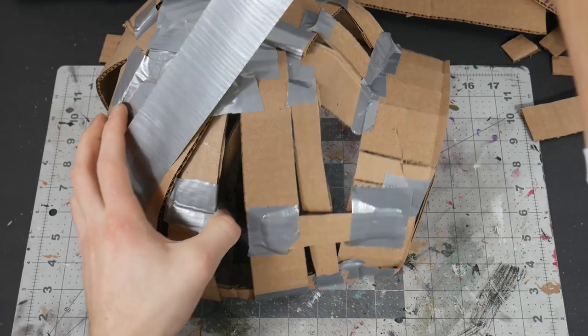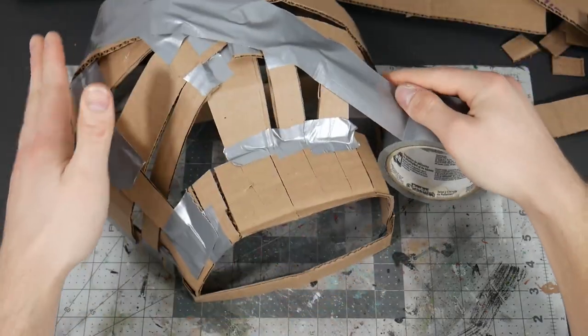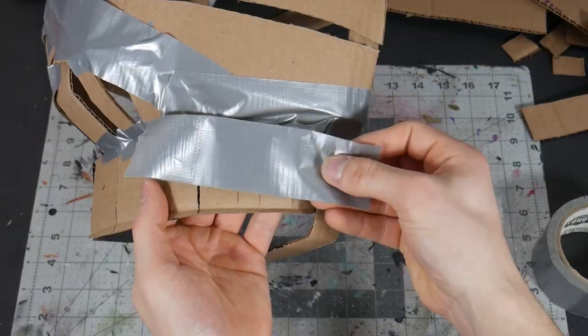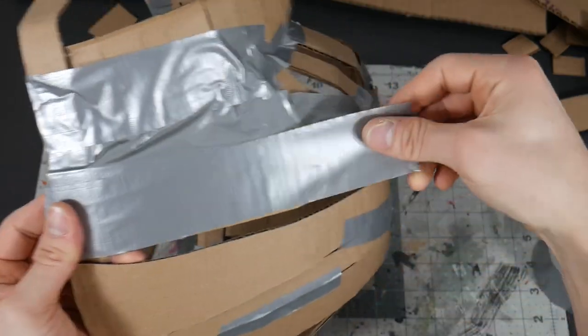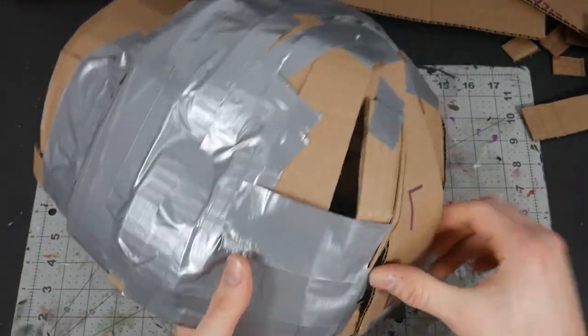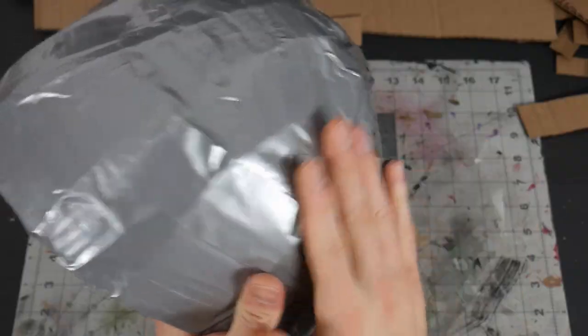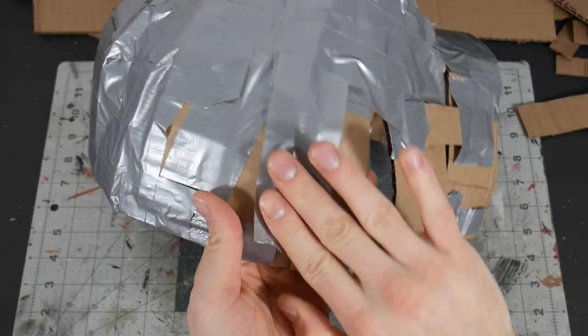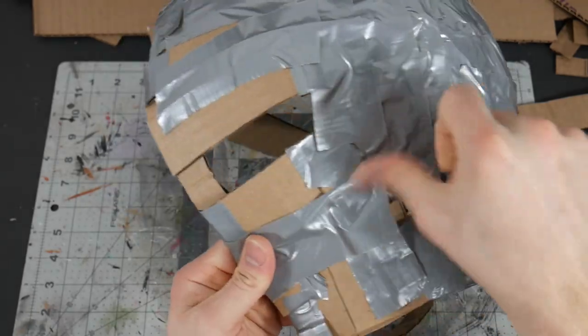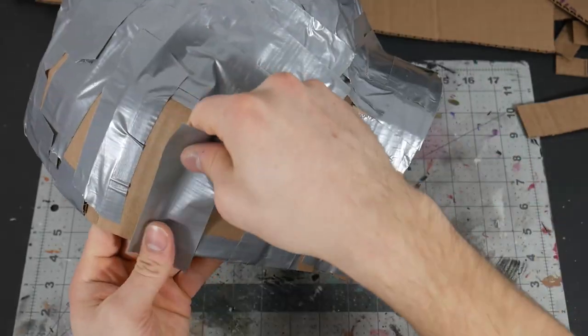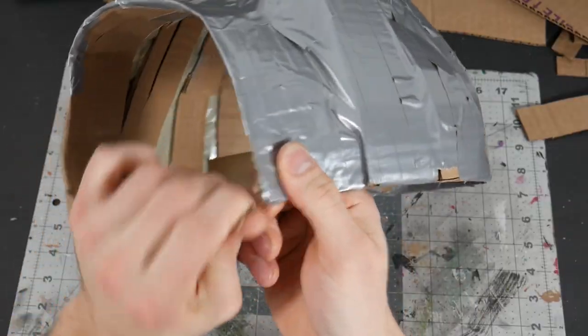Once that was done, I started applying a ton of duct tape to it, and I mean a ton. I really started to just make sure every area of this cardboard was completely covered in duct tape. This was really old and kind of junky duct tape that I've had for a long time, so it didn't really have much of a good purpose besides this really, and honestly, it worked out really well for making this come together.